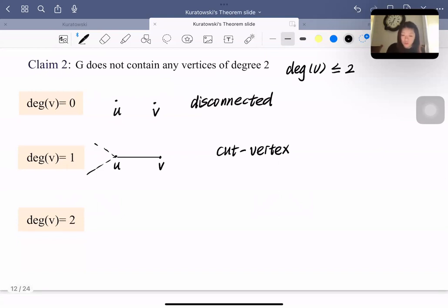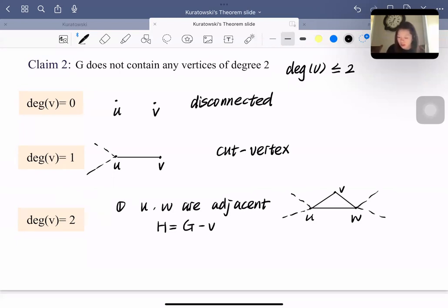And if degree of v equals 2, we need to consider two cases. The first one is u and w are adjacent. So first, we set up the subgraph. Let the subgraph be the graph with removing the vertex v. So we draw the diagram with u and w, since they are adjacent. And we embed the vertex v into the graph and connect u, v, and w. In this case, we can see u, v, w is a plane, and the graph is planar, which contradicts that G is not planar.